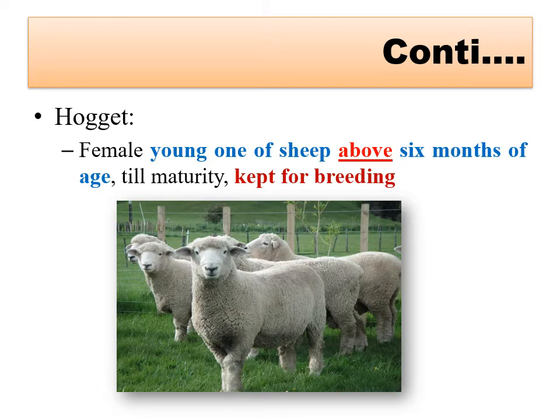So hogget is a female young one of sheep above six months of age up to its first lambing. Lambing means the act of parturition in sheep.